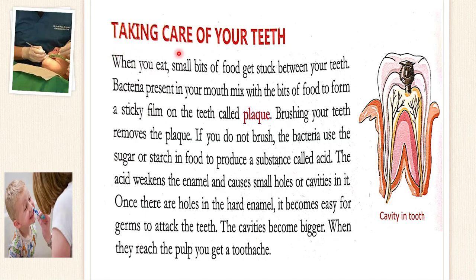Now let's see how to take care of our teeth and why we should. When we eat our food, small bits of food get stuck between our teeth. Bacteria present in our mouth mix with these bits to form a sticky film on the teeth called plaque. Brushing our teeth removes this plaque. But if we don't brush, the bacteria use sugar or starch in the food to produce an acid, and this acid weakens the enamel — the hardest part of our body — causing small holes or cavities. Germs then attack the teeth, cavities grow bigger day by day, and when they reach the pulp we get a toothache. It is very important that if we notice cavities, we must go to the dentist, who can stop the cavities from growing by filling them up.